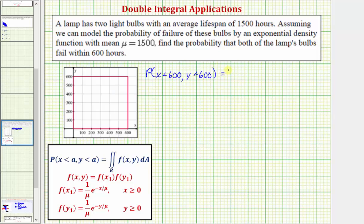Taking a look at our notes, this probability is equal to the double integral over the region R of f(x, y), where f(x, y) is equal to the product of f₁(x) and f₁(y). Both of these are the exponential density function, where in our case the mean μ is equal to 1,500.